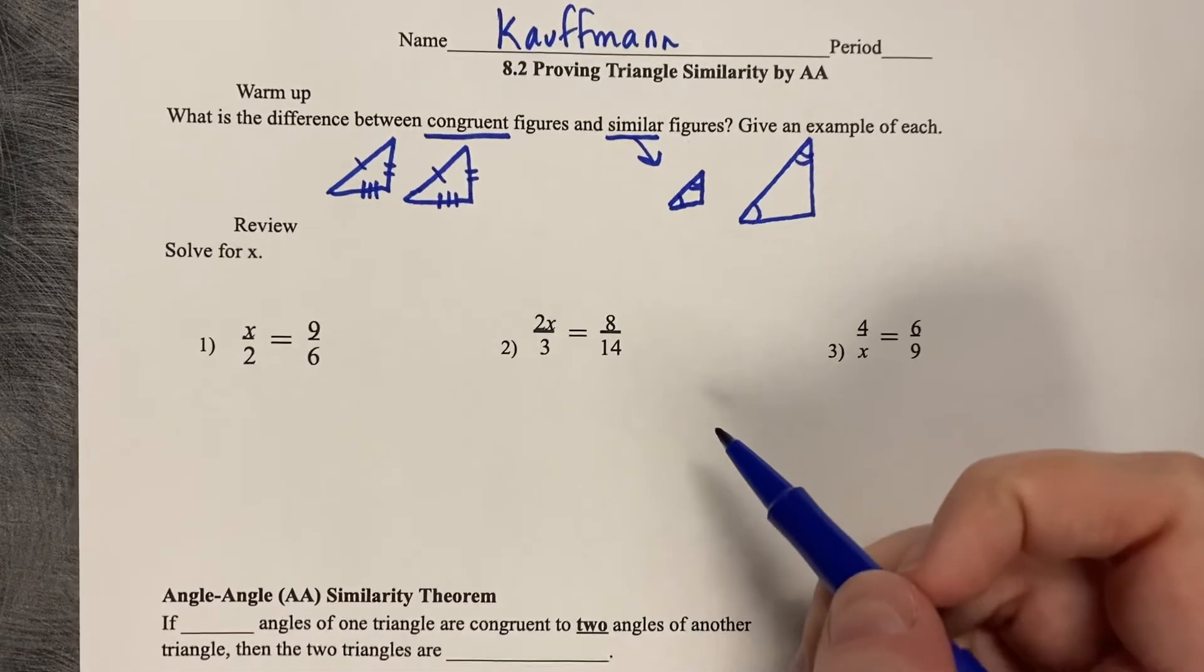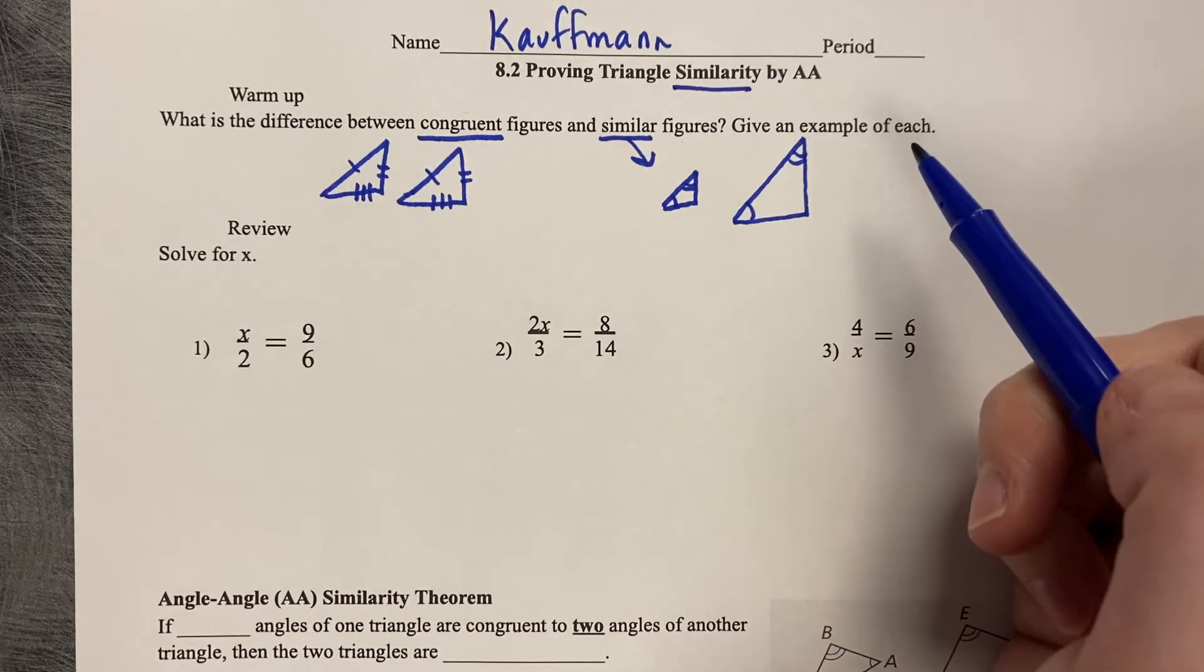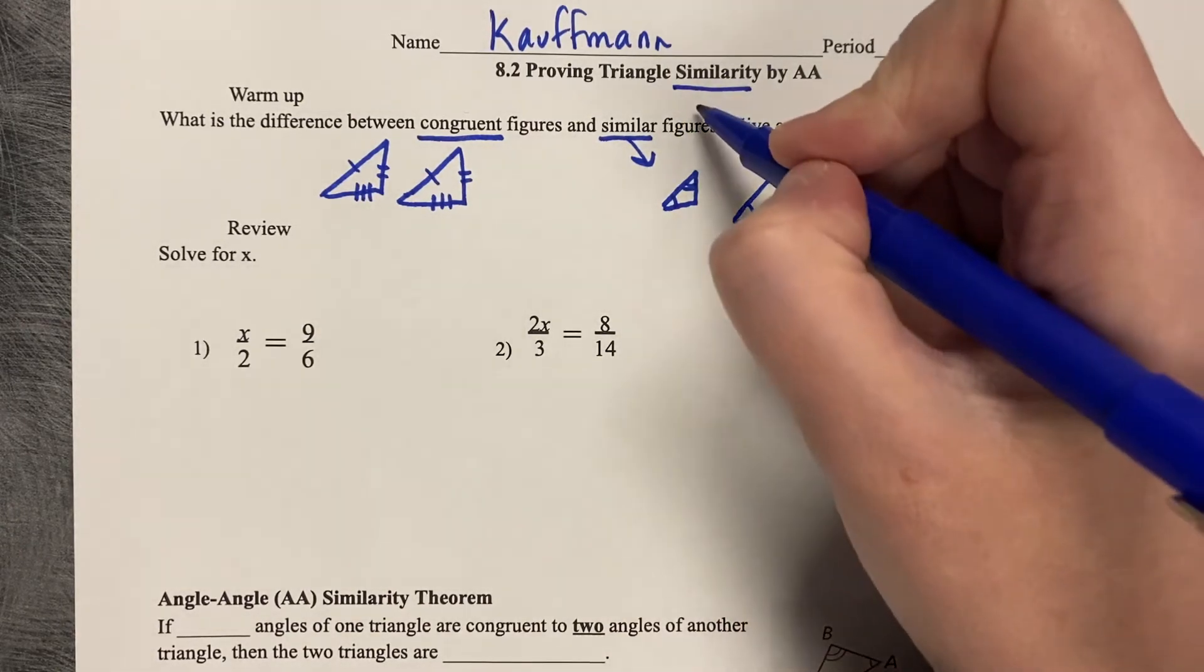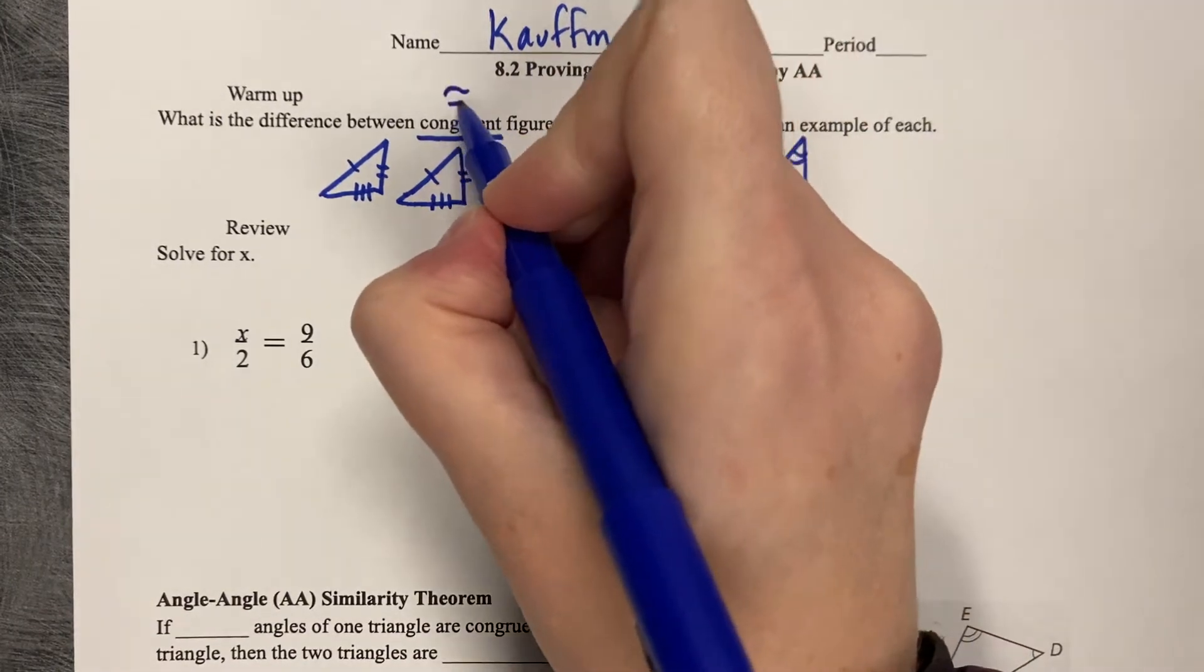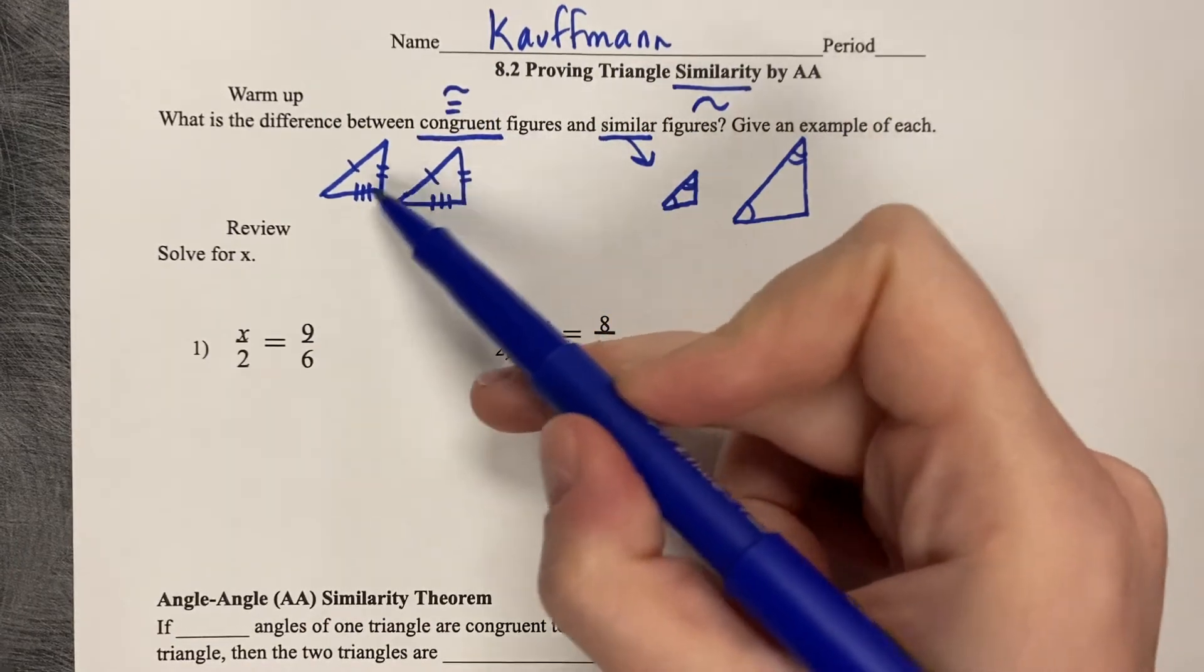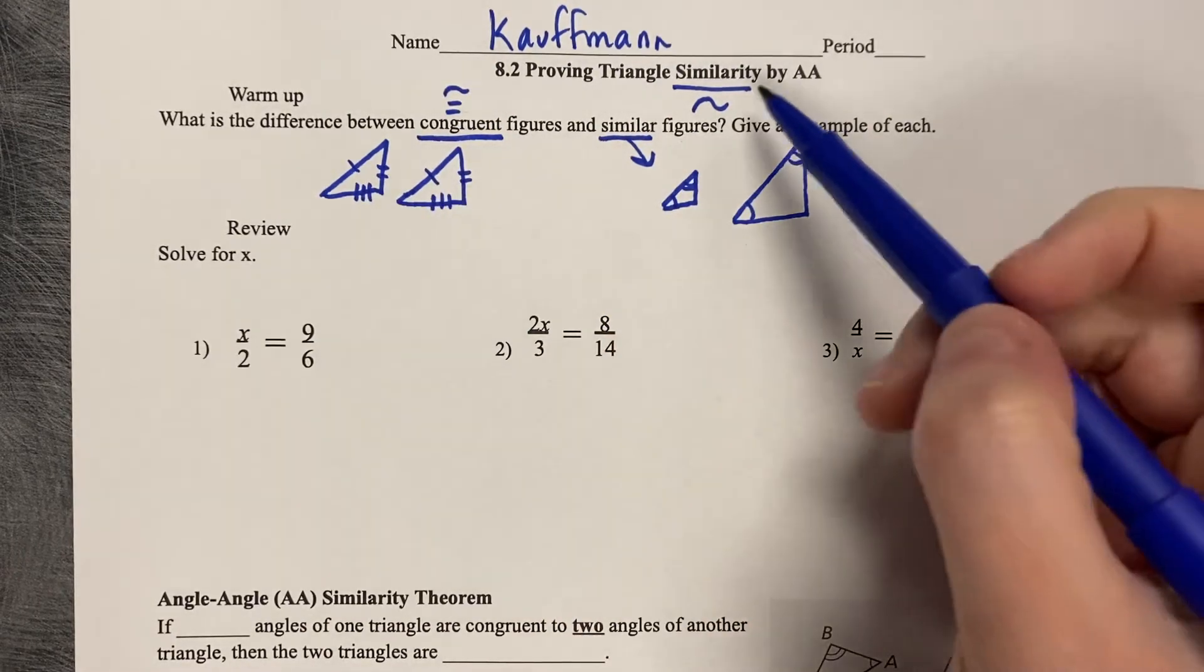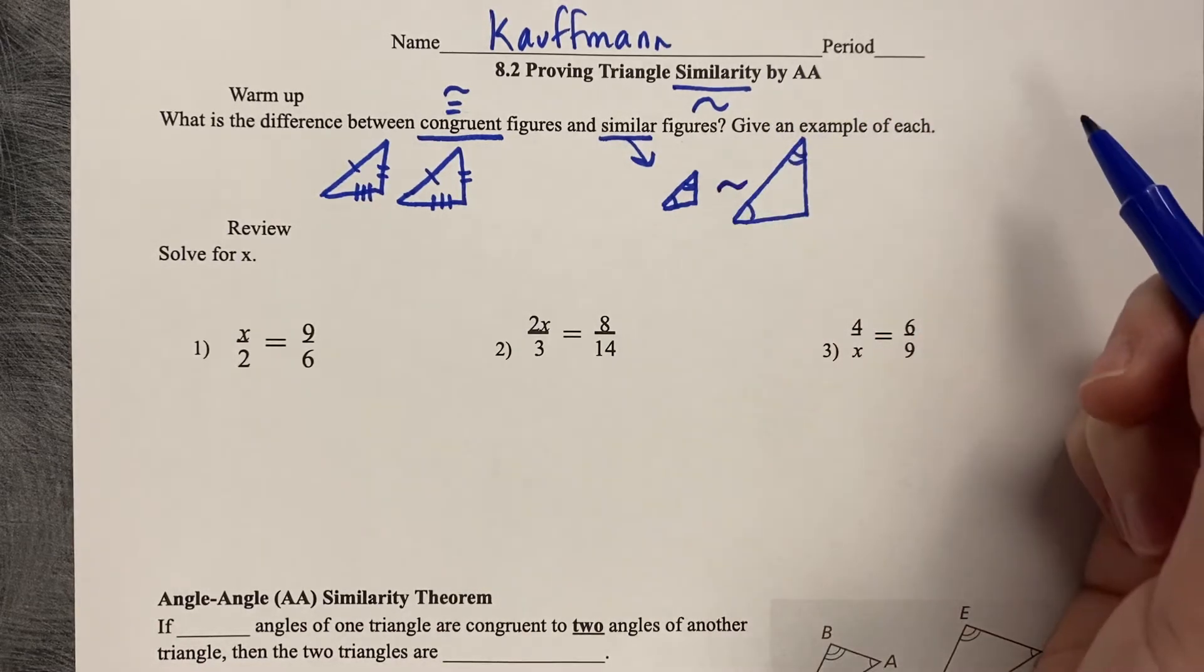When we're working with similarity, that's what we're working with today. The new symbol for similarity looks like this - just one squiggle line for similarity. Congruent is a squiggle line with an equal sign underneath. The difference being that congruent figures are exactly the same size. They're equal. Whereas similarity, they're just similar to each other. They're the same shape, but not the same size.